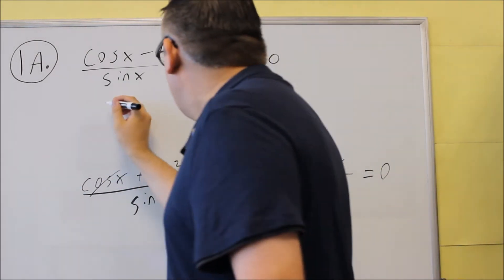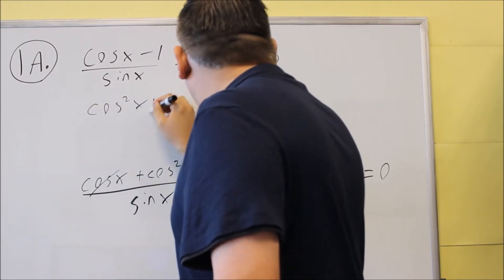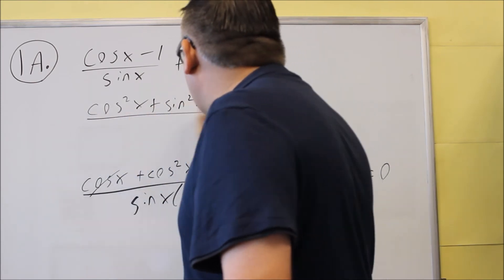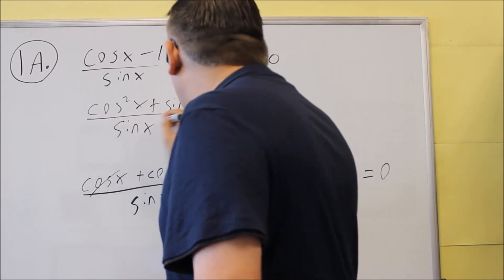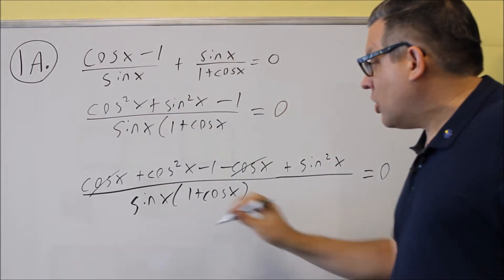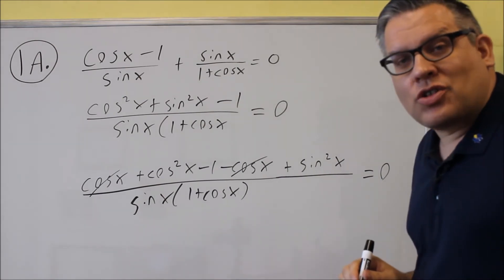Okay, so next we're going to do, I'm just going to rearrange things here. So I'm going to put cosine squared x plus sine squared x minus 1. Everything else cancels out over sine x times 1 plus cosine x. So I've cancelled out the cosines. I've rewritten the cosine squared and sine squared together.